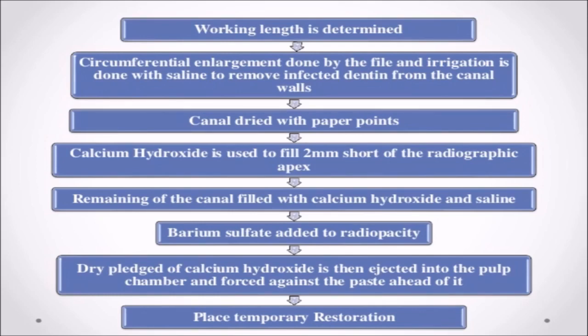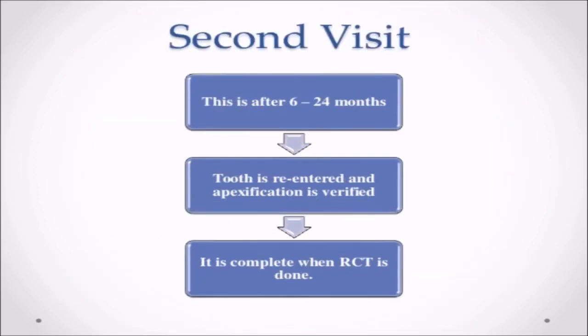Circumferential enlargement is done by file and irrigation with saline to remove infected dentin from the canal walls. Canal is dried with paper points. Calcium hydroxide is used to fill 2 mm short of the radiographic apex. The remaining canal is filled with calcium hydroxide and saline, with barium sulfate added for radiopacity. A dry pledget of calcium hydroxide is then ejected into the pulp chamber and forced against the paste. Place temporary restoration. Second visit is after 6–24 months; tooth is re-entered, apexification is verified, and if complete, RCT is done.